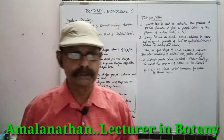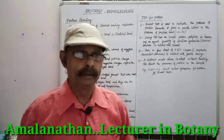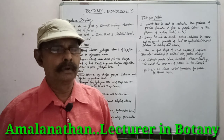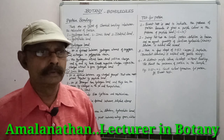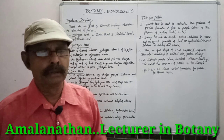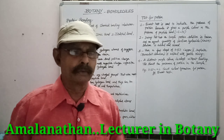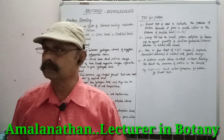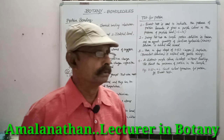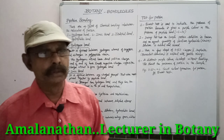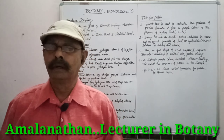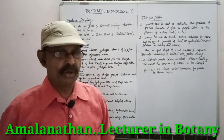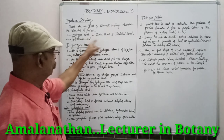Today's topic is protein bonding. Between protein molecules, there are different types of chemical bonds. There are four types of chemical bonding in protein: number one, hydrogen bond; number two, ionic bond; number three, disulfide bond; number four, hydrophobic bond.